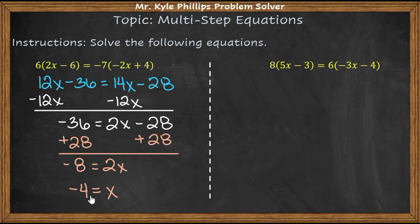Now all that means is that if I took the number negative 4 and I substituted it in for x, both sides of this equation would be equal. Let's look at another one.